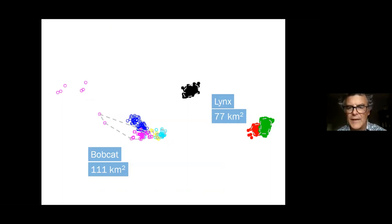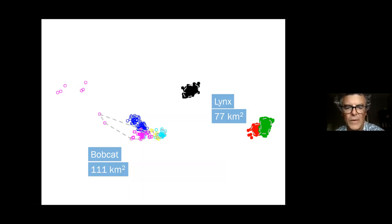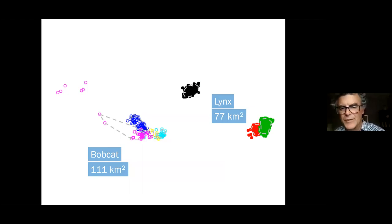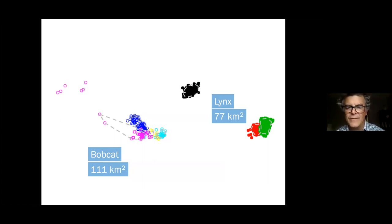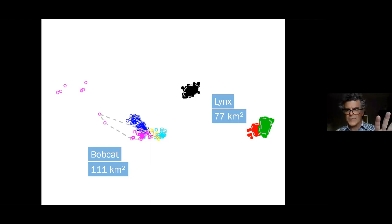To give an example of how lynx and bobcat home ranges relate: in one section of the map with both lynx and bobcat home ranges — all adult males — the lynx home range was 77 square kilometers, while bobcat home ranges averaged 111 square kilometers, so bobcat home ranges are bigger. Notably, we never had a situation where lynx and bobcats were interacting as detected through GPS telemetry — they were completely allopatric, not overlapping at all.